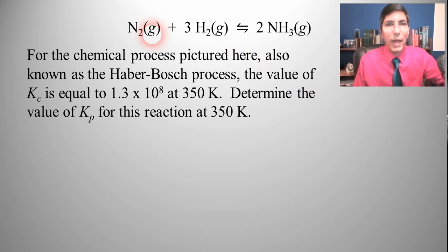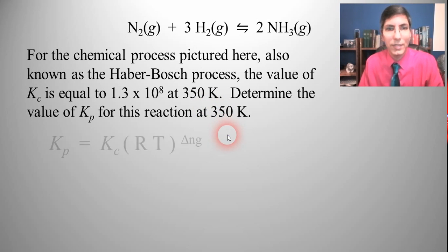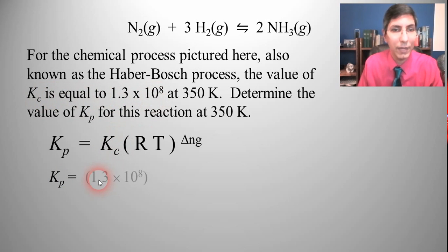So let's try an example. Now let's use the same reaction that we had here earlier. This process called the Haber-Bosch process. The value of Kc is 1.3 times 10 to the eighth at 350 kelvins. Let's determine the value of Kp for that reaction at the same temperature. So once again we're going to use the same equation that we had earlier. Kp equals Kc times RT to the delta ng and we're just going to plug and chug. So Kp is what we're solving for. It says determine the value of Kp. So that's our unknown. Kc is given to us. It's 1.3 times 10 to the eighth. So that goes in for that.